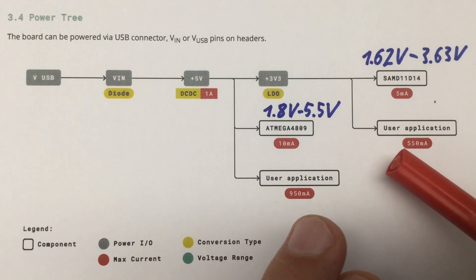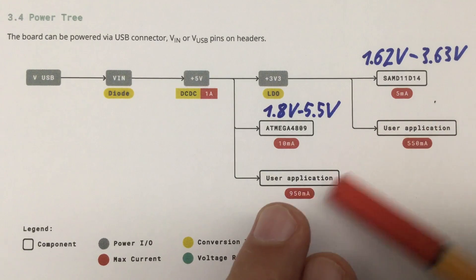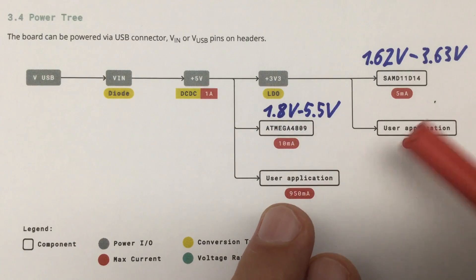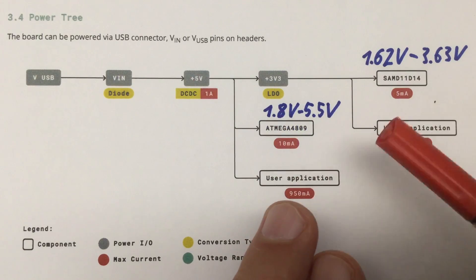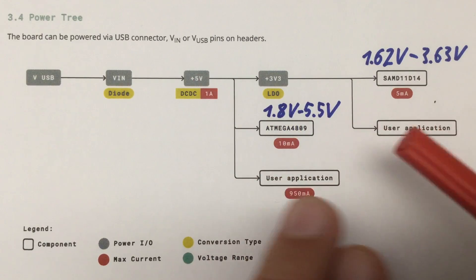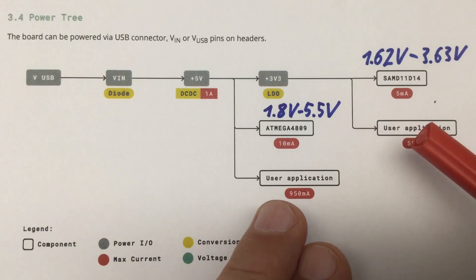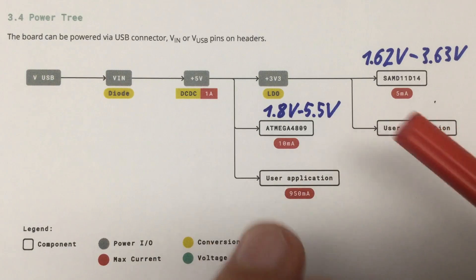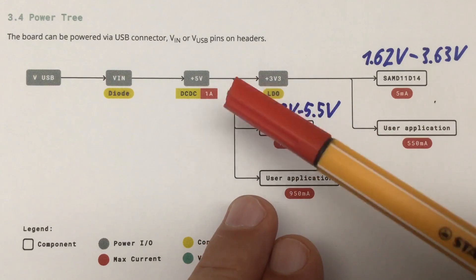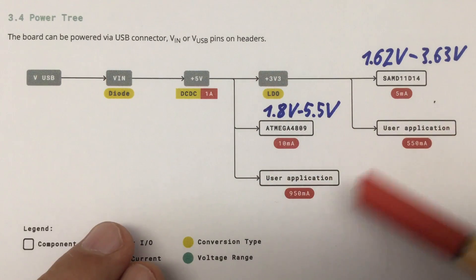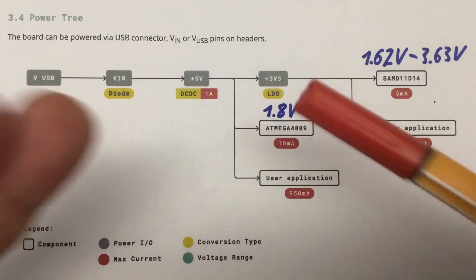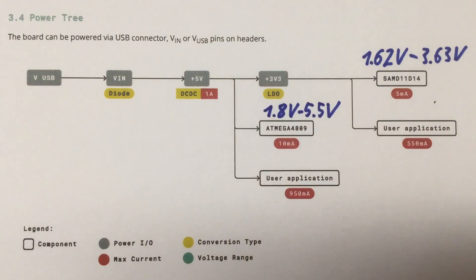You have that 3 volt pin where you can also pull out up to 550 milliamps. Obviously there's a little contradiction here, so total consumption of your user application out of the 5 volt pin and the 3.3 volt pin should be probably well below 1 amp. Besides the confusing amperages here, there is another problem with that power tree diagram.